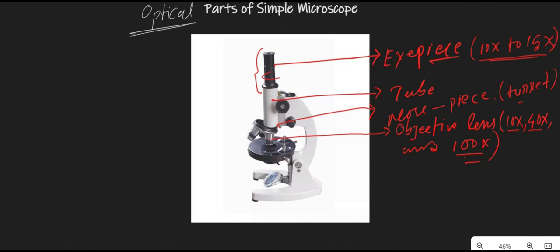The next part is the diaphragm, located beneath the stage. The function of the diaphragm is to control the amount of light that passes through the stage. There is a knob — you can slide it to reduce the amount of light or slide it back to increase the amount of light.